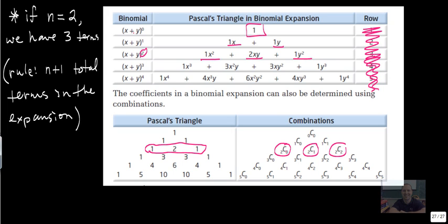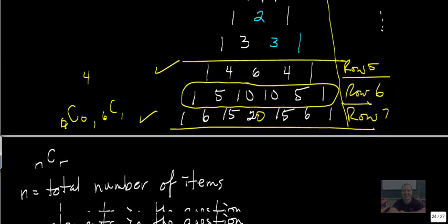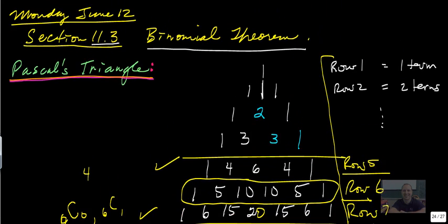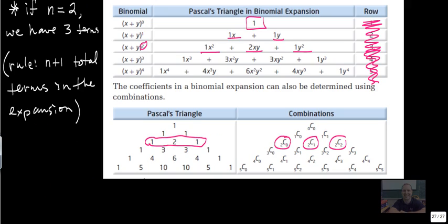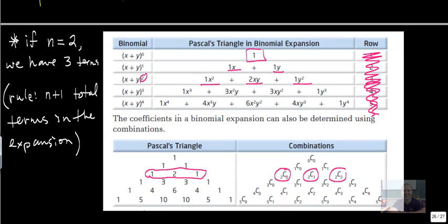Pascal's triangle, how do you get the terms of Pascal's triangle using combinations? The second part, and again remember, this is all shortcut stuff, right? The binomial theorem, this is how you get shortcuts to this.